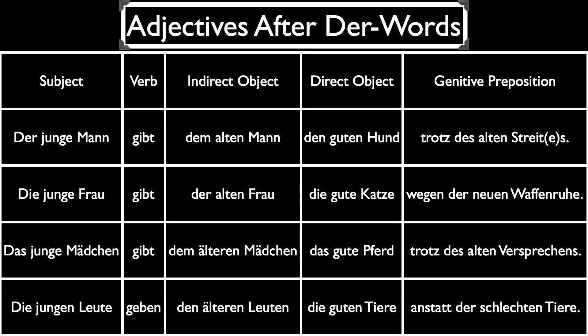Notice that all of the adjective endings in this sentence are EN with the exception of the nominative case. The young woman gives the old woman the good cat because of the new truce. In this sentence we have two adjectives that take an E — the nominative and the accusative. The other two take an EN. Our third example uses only neuter nouns: Das junge Mädchen gibt dem älteren Mädchen das gute Pferd trotz des alten Versprechens — The young girl gives the older girl the good horse in spite of the old promise.